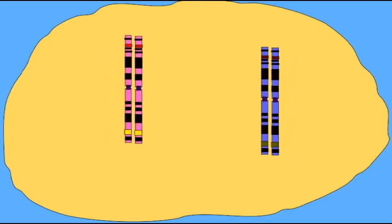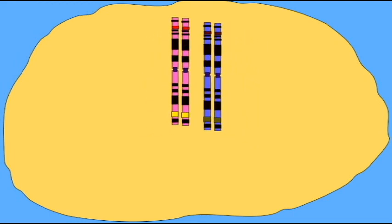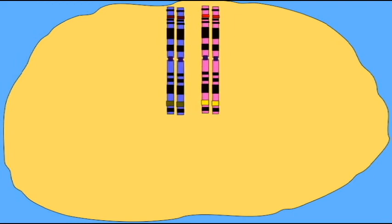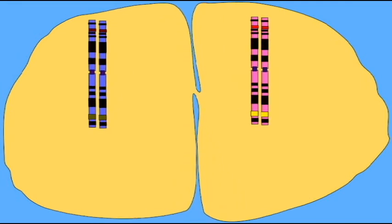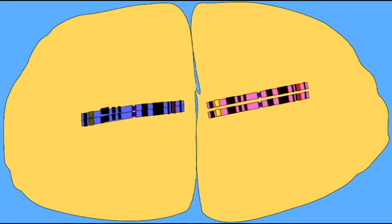Obviously, the exception to this independent assortment of genes is when the genes are located on the same chromosome. That way, if a sex cell receives one of the mutated genes, it is likely to receive the other mutated gene if they are located on the same chromosome and are structurally bound.